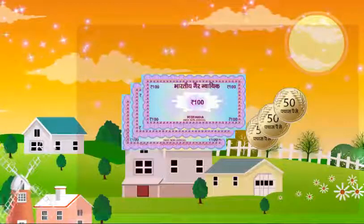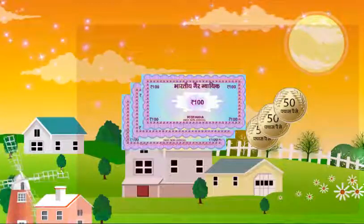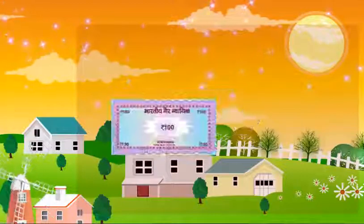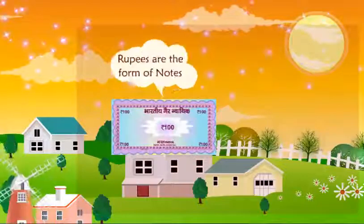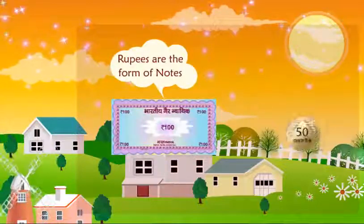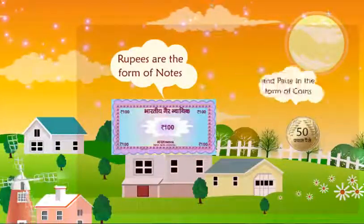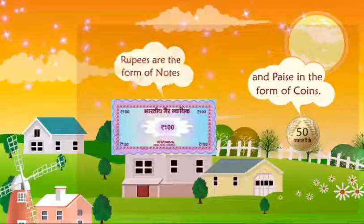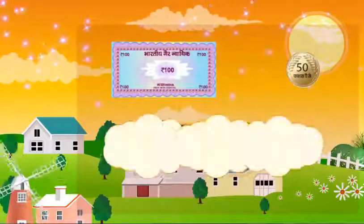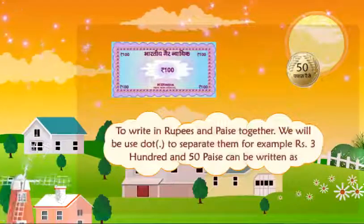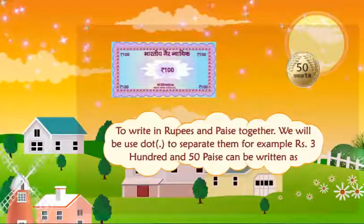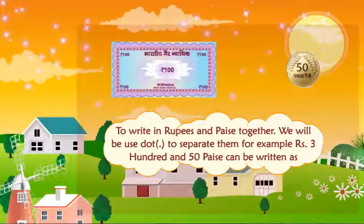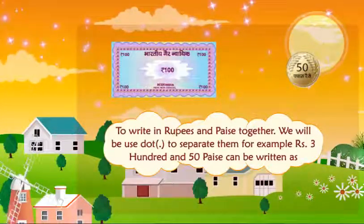Money used in India is rupees and paise. Rupees are in the form of notes and paise in the form of coins. To write rupees and paise together, we will use a dot to separate them.